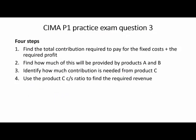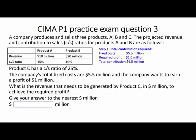The question is: what is the revenue that needs to be generated by product C in millions of dollars to achieve the required profit? There are four steps. First, find the total contribution required to pay for all the fixed costs and the required profit. Then find out how much will be provided by products A and B. The difference will be how much contribution is needed from product C. If we then divide that answer by the CS ratio, that will give us the required revenue.